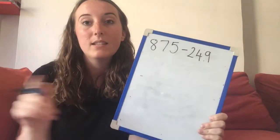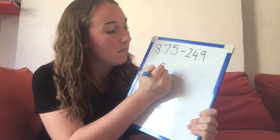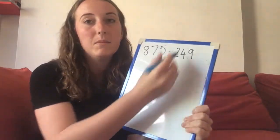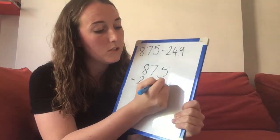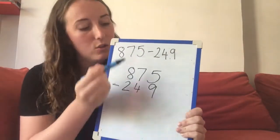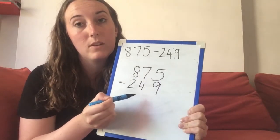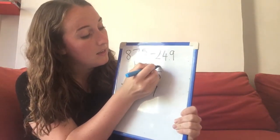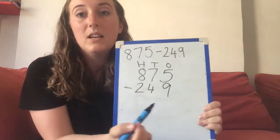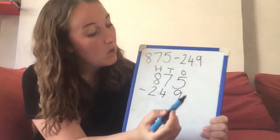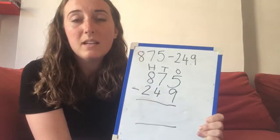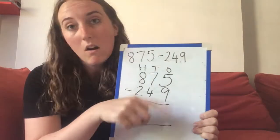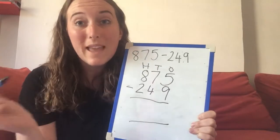I'm going to start in exactly the same way as when I had no exchanges. I take my first, biggest number and write it down, then my second number underneath. Remember, it's really important that we make sure our columns are aligned — the hundreds need to be on top of each other, the tens on top of each other, and the ones on top of each other. It might help to write hundreds, tens, and ones above so you don't get confused. Starting in the ones column: it's 5 take away 9. I can't take away 9 from 5 because it's too big, and remember you cannot flip the numbers round and do 9 take away 5 — we have to exchange instead.